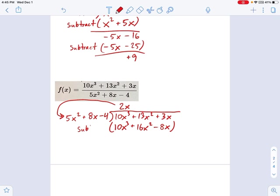I get 10x cubed plus 16x squared minus 8x. And I'm going to take that whole thing I just found there, and I'm going to subtract it. So what do we get?